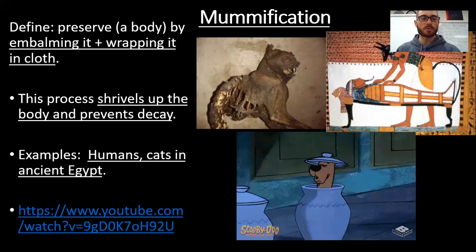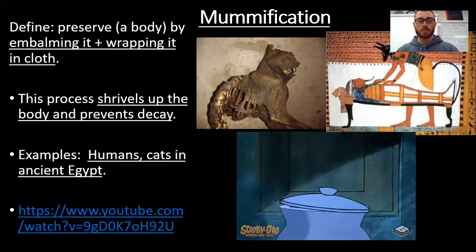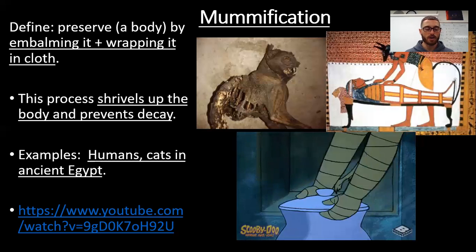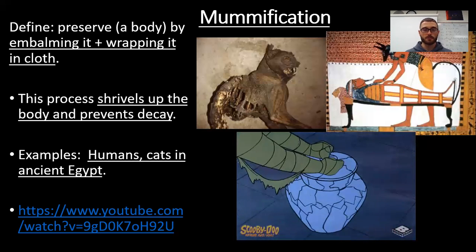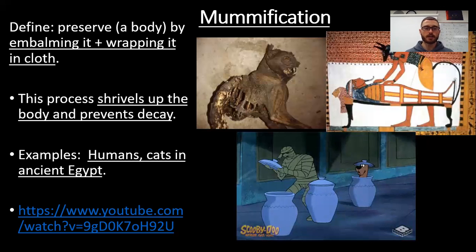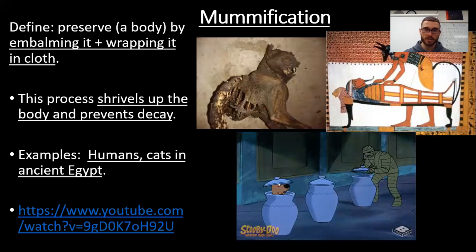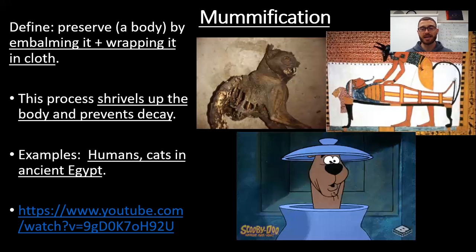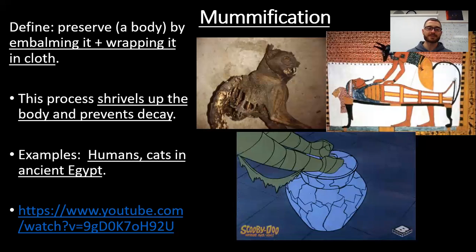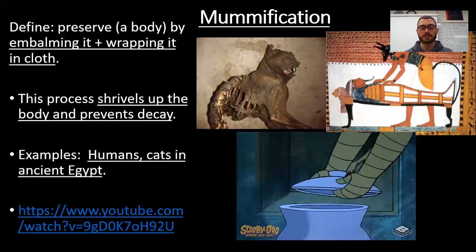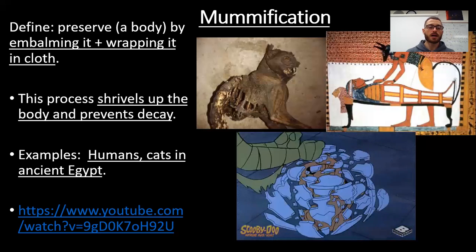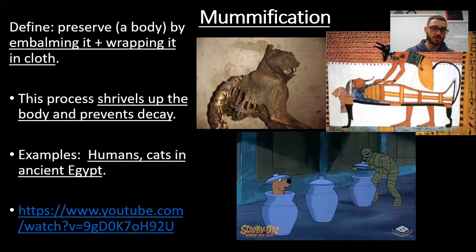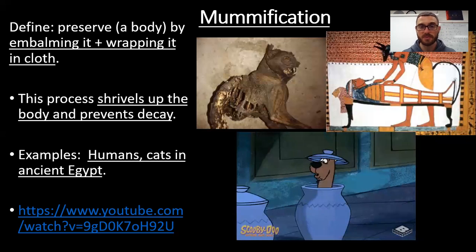Our first section is mummification. Take a moment to get down the definition and example. Specimens are wrapped in bandages and embalmed with a fluid — kind of like a grape turns into a raisin. They actually remove the organs and brain of the specimen to help preserve the body as much and as long as possible, leaving just the flesh, skin, and bones. This prevents human decay. Examples include humans and cats in Egypt — cats were seen as sacred in ancient Egypt, so many cat fossils are found there.